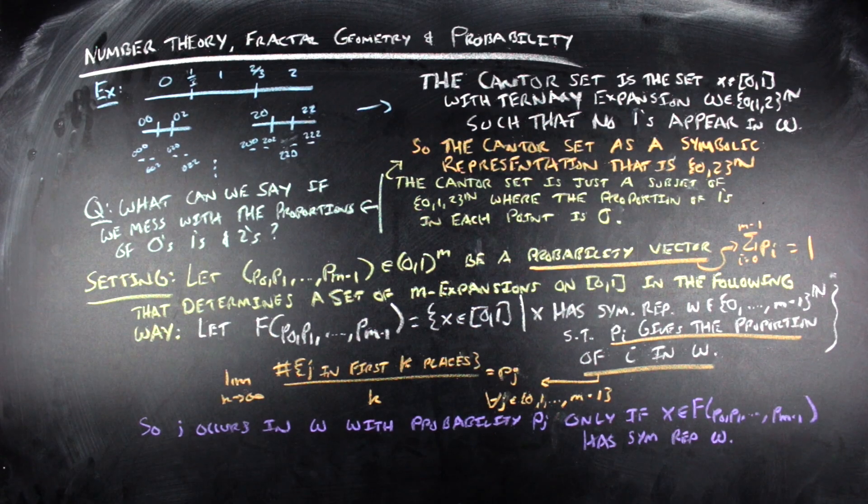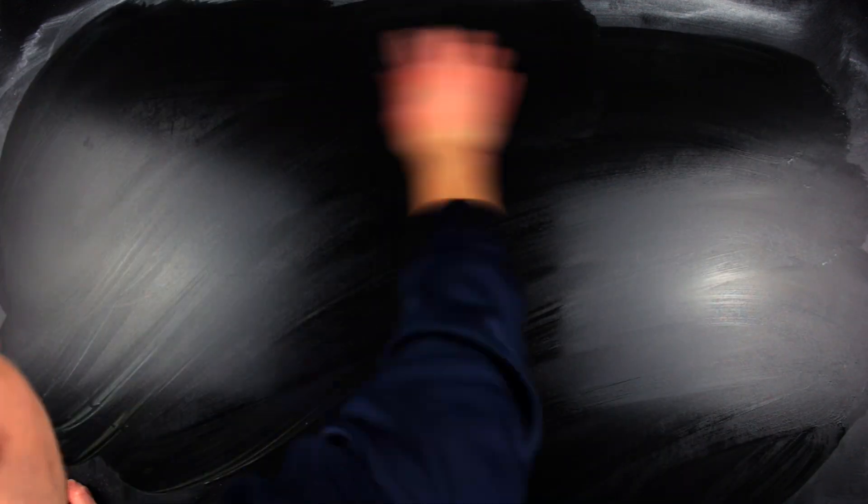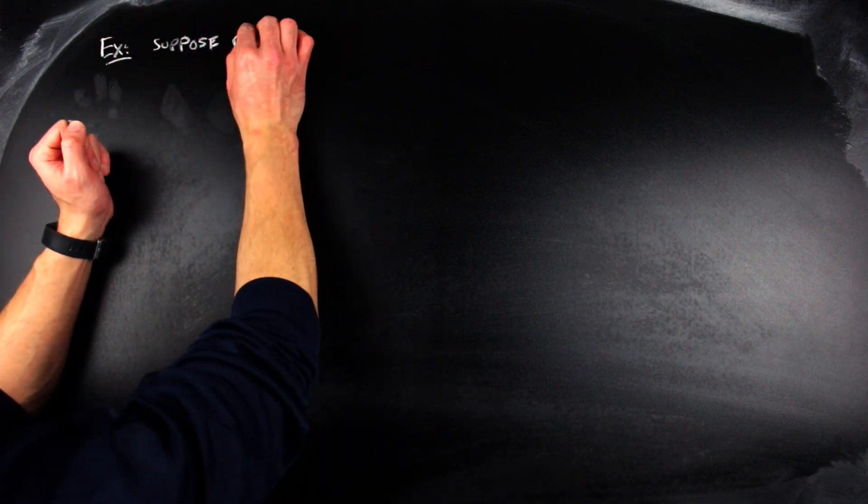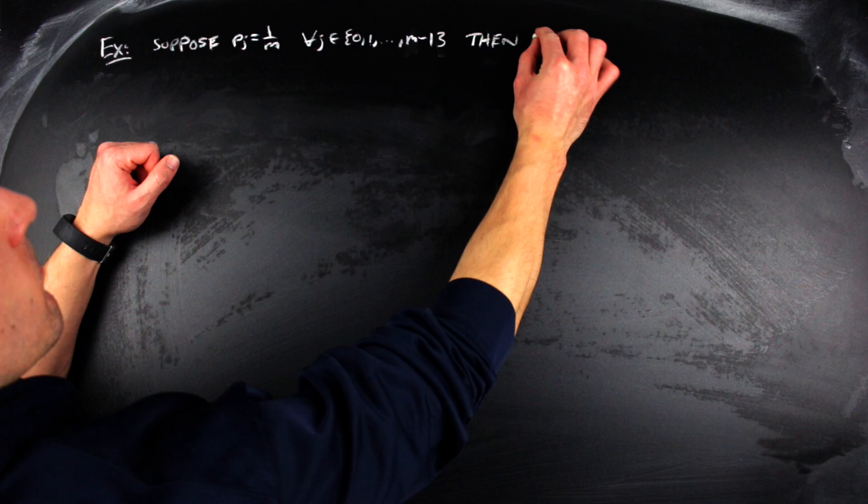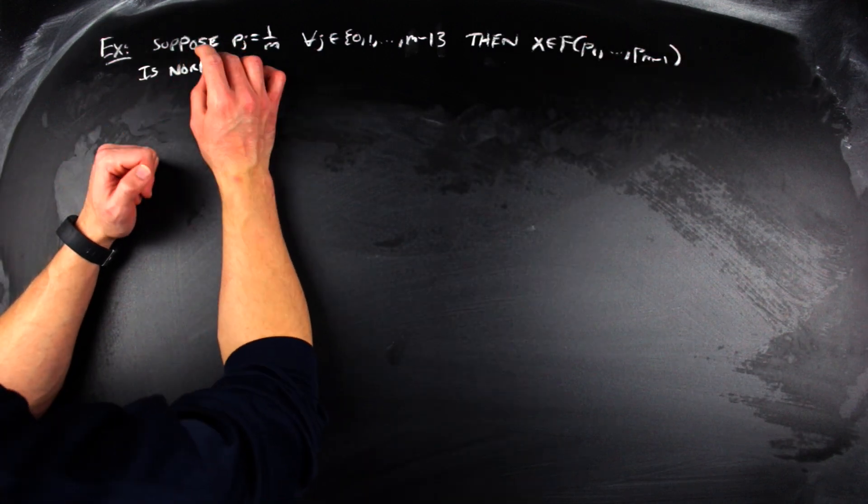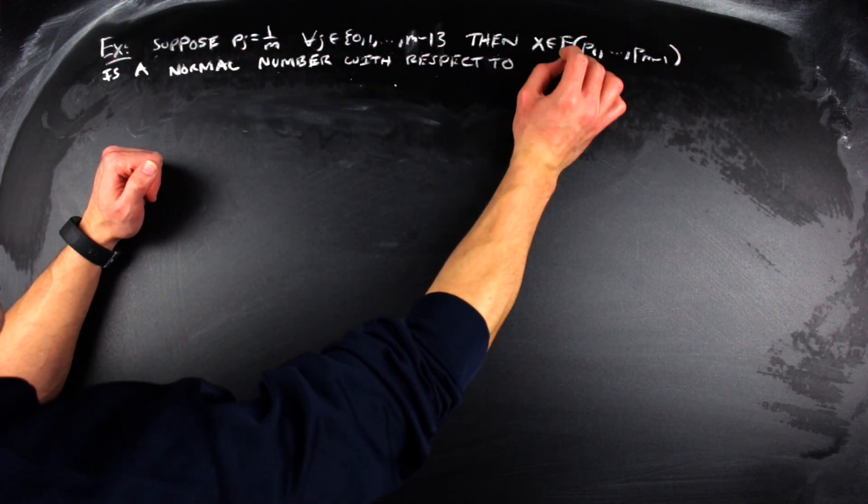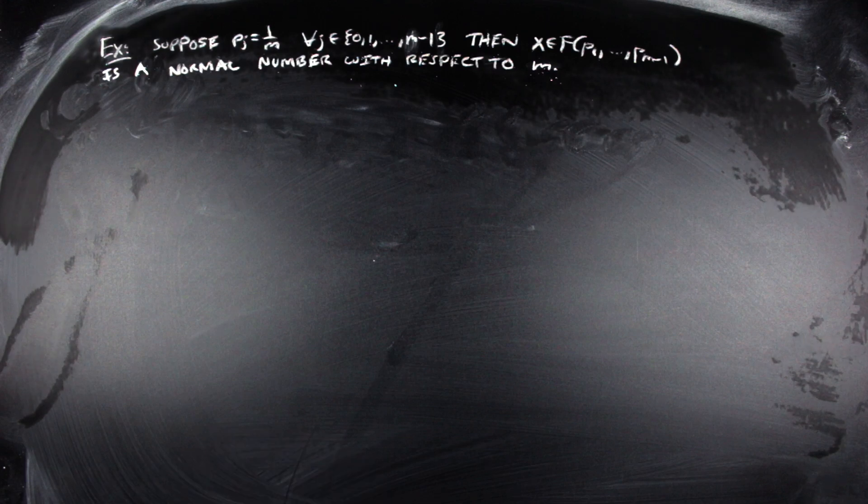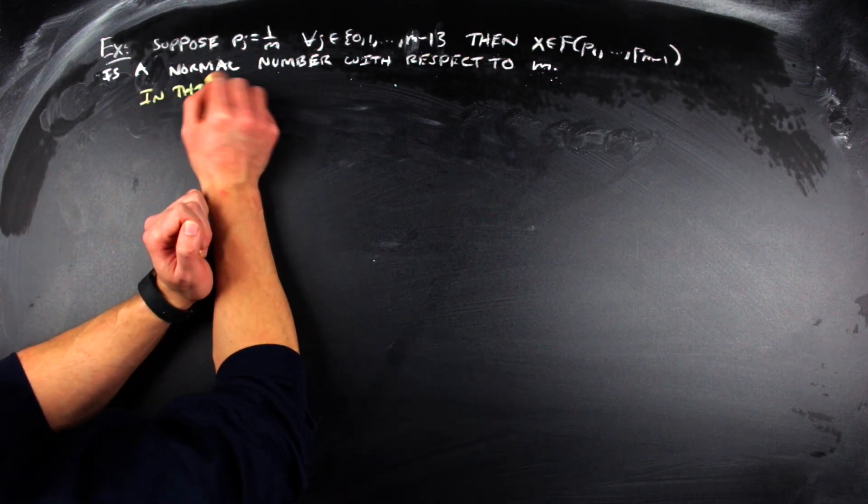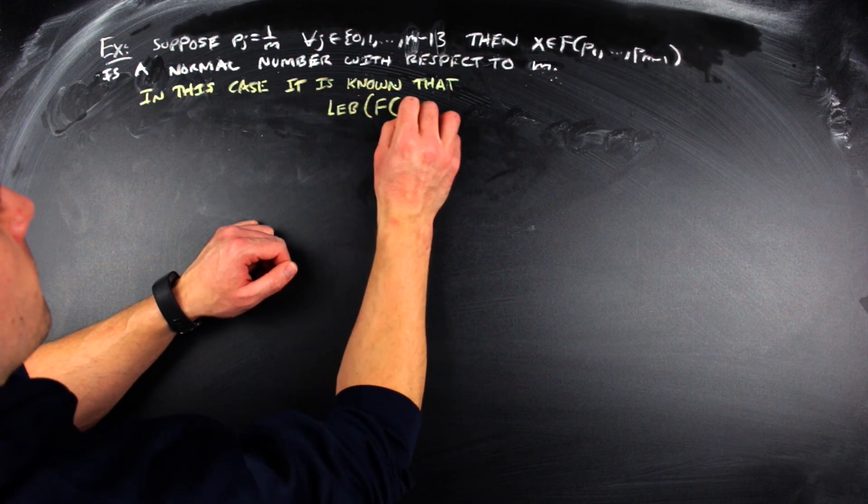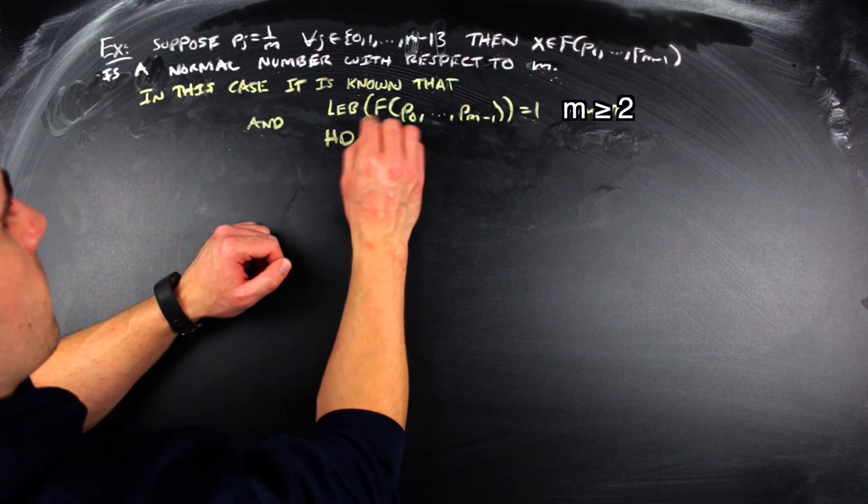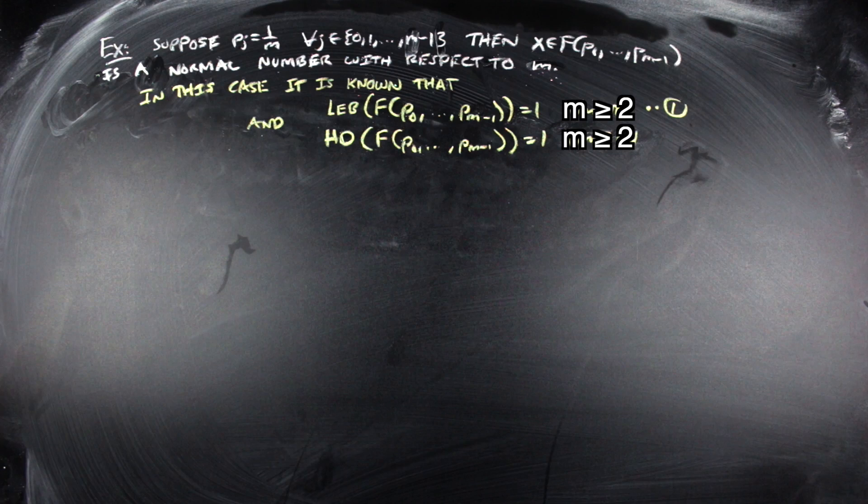So the first thing I want to talk about here in terms of the setting is what is well known. If you have the scenario where all of your p sub j's is just equal to 1 over m, x within the set f of the probability vector is going to be what's called a normal number with respect to base m. In this case, it's fairly well known that the Lebesgue measure of this set is going to be equal to 1, and also the Hausdorff dimension of this set is going to be equal to 1 for every m greater than or equal to 2.